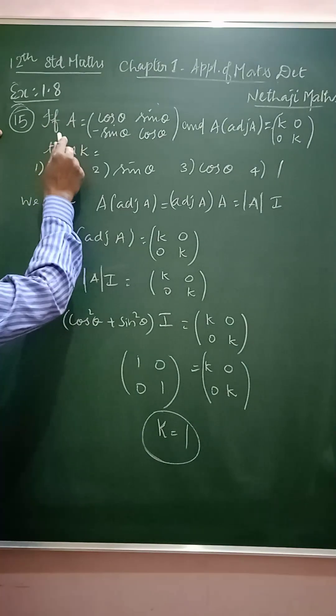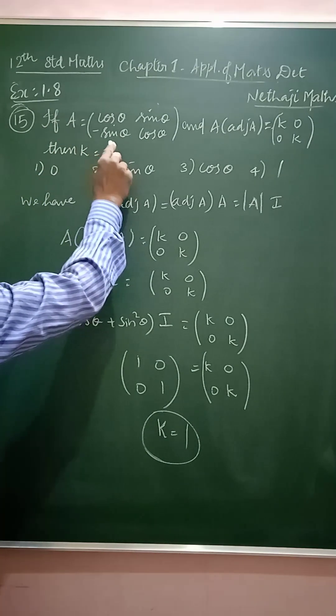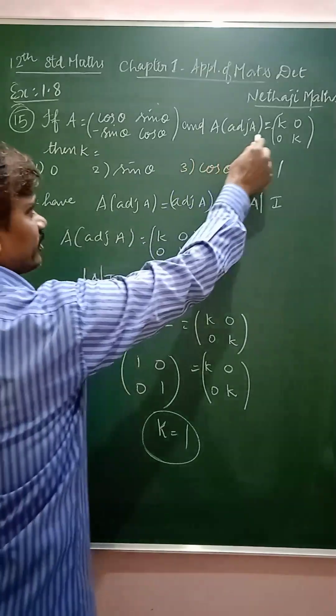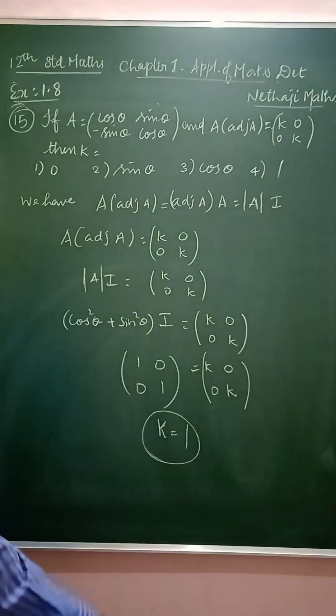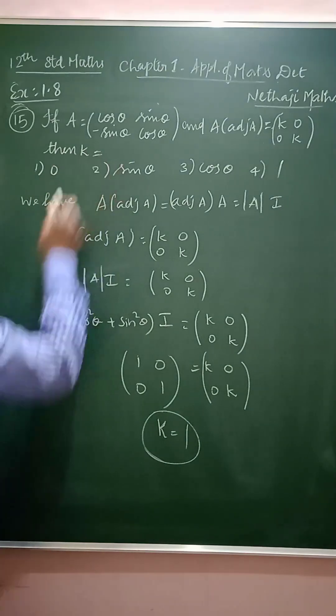The first 15th question is, if A equal to 2 by 2 matrix and A into adjoint of A is equal to k0 0k, 2 by 2 matrix of element k0 0k, then we have to find the value of k.